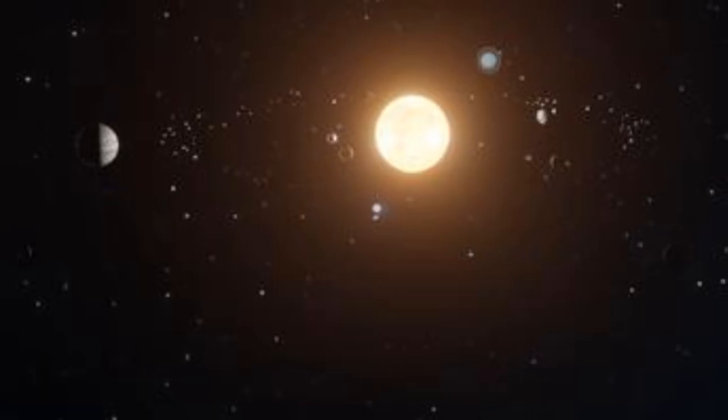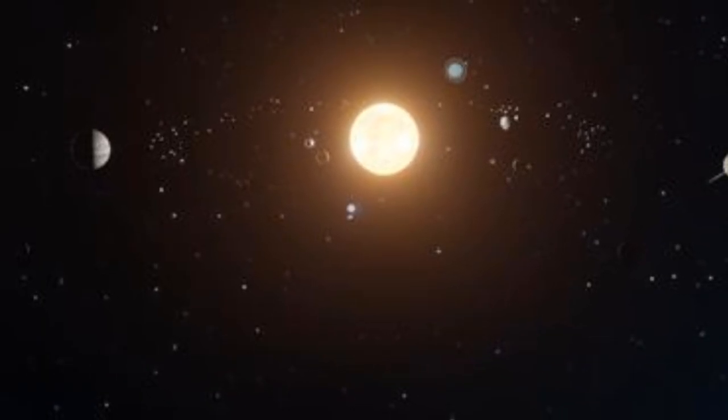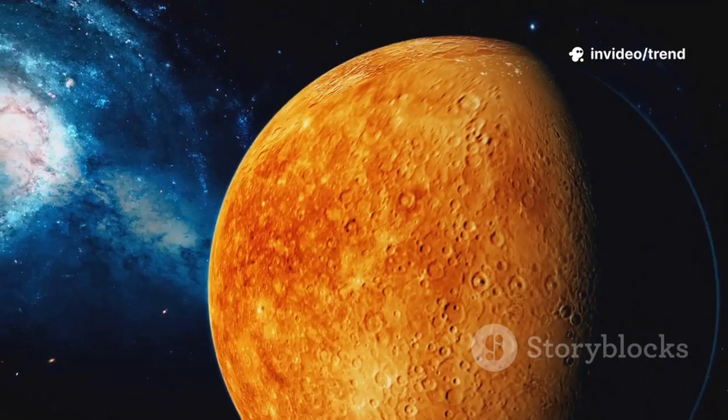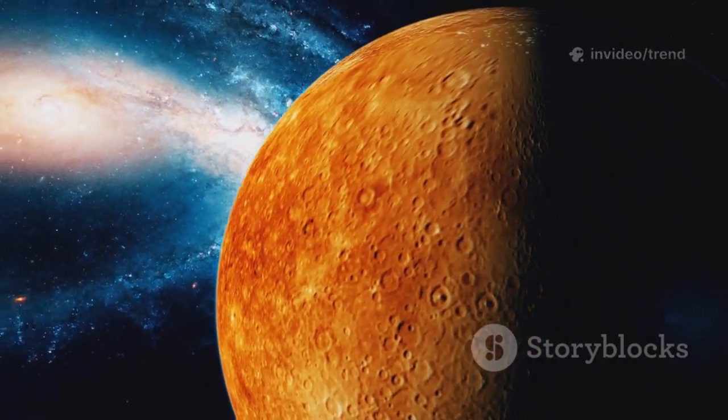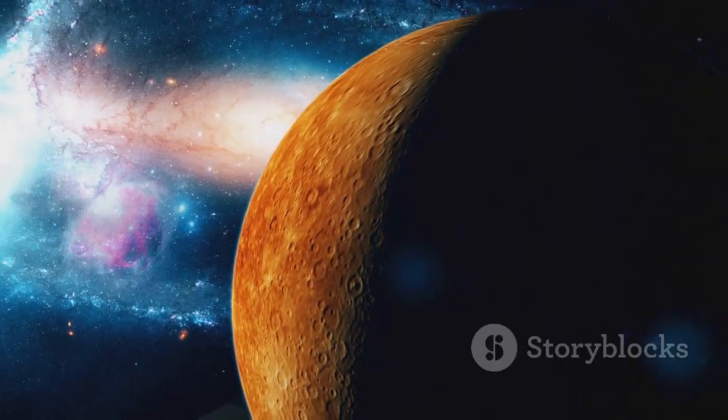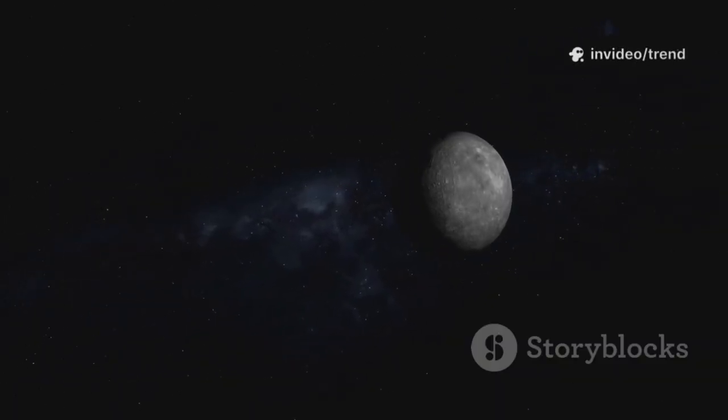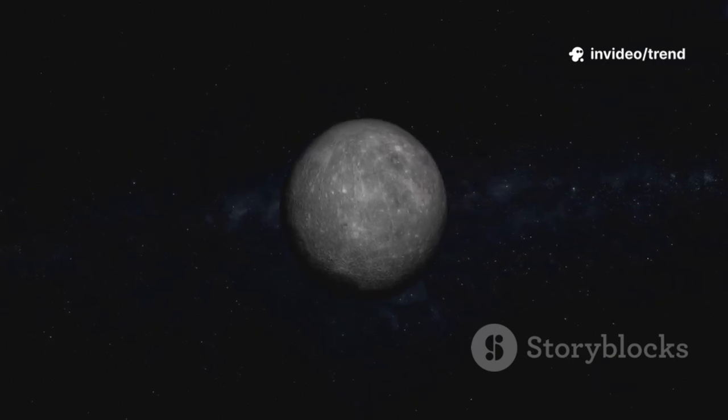Mercury's orbit is already wobbly, tugged and twisted by the immense gravity of both the Sun and the distant giant Jupiter. Even now, its path isn't perfectly stable. If a passing star came close enough, it could give Mercury just enough of a nudge to destabilize its delicate path, like flicking the first piece in a line of dominoes. Mercury's orbit might stretch out into a wild ellipse, or it could even be sent careening toward Venus, or spiral straight into the Sun.